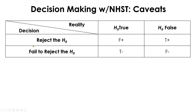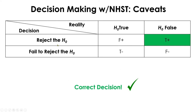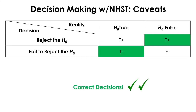The rows represent the decision we make about the true reality after running null hypothesis significance testing — we either reject or fail to reject the null. Under this scheme, we make correct decisions in two cases: when we reject the null and the null is indeed false in reality, and when we fail to reject the null and the null is indeed true in reality.